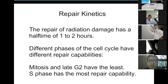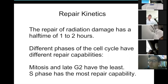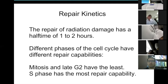The half-time of repair is one to two hours — quite quick. Because of this, phases of the cell cycle have different repair capabilities. Mitosis and late G2, just before cell division, have little repair capacity because there's no time — damage is passed to daughter cells. S phase has the most repair capacity because the DNA is open and all repair proteins are available.